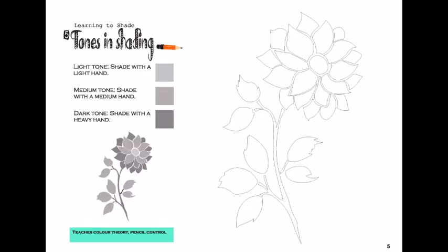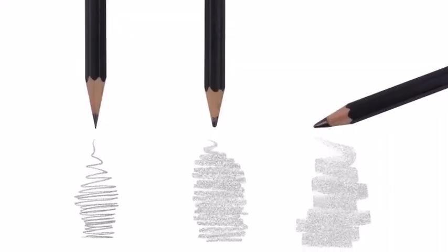Activity 5 – Tones & Shading. Learning to Shade. This exercise helps you practice shading in low, medium and high tones. Let's get started.